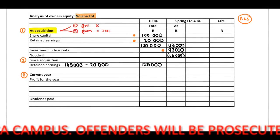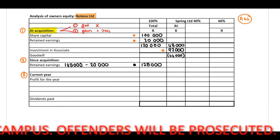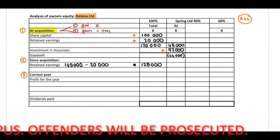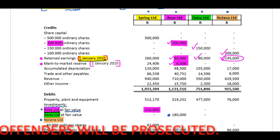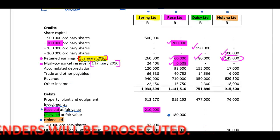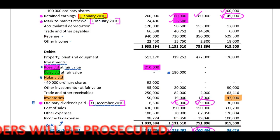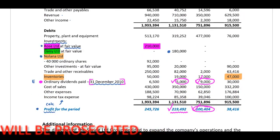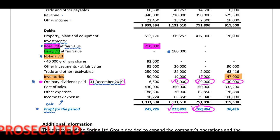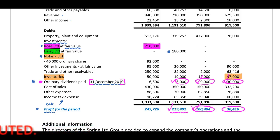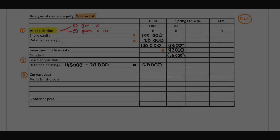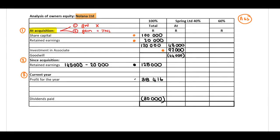I've included my calculation on this 125,000 in our SINCE acquisition retained earnings section. When you look at the trial balance again, you need to identify any other amounts to transfer. Two things: your Nulana dividends of 30,000 and the profit for the year of 38,416. Let's transfer both of these to our analysis of owner's equity — profit for the year 38,416, dividends paid 30,000.